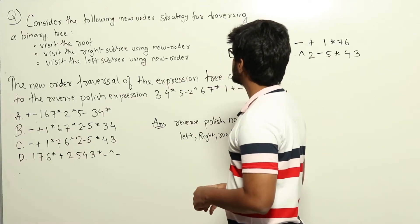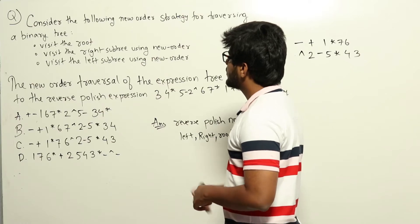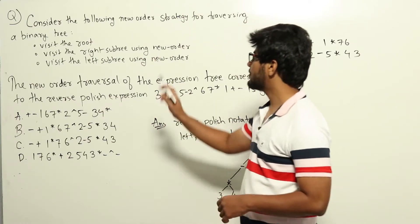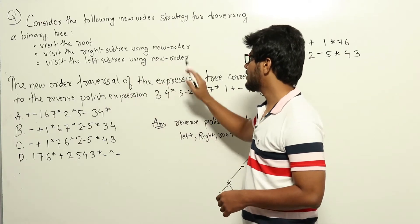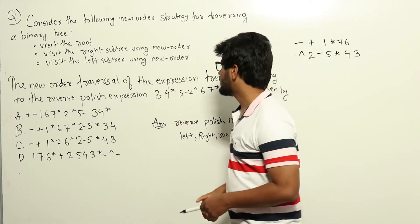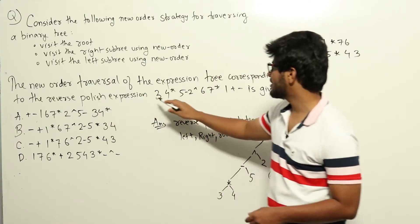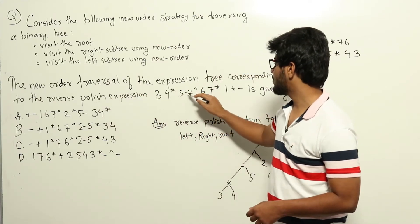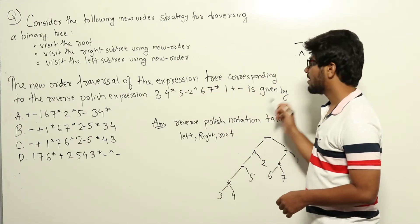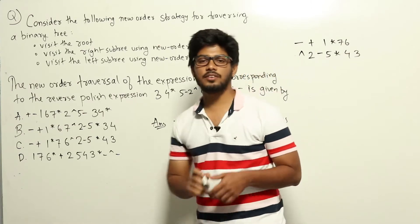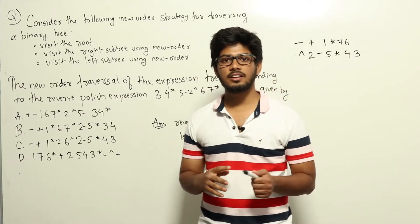Consider the following new order strategy for traversing a binary tree: first visit the node, then visit the right subtree using new order, and then visit the left subtree using new order. The new order traversal of the expression tree corresponding to the reverse polish expression 3 4 * 5 - 2 ^ 6 7 * 1 + - is given by — four options have been given.